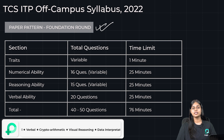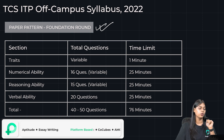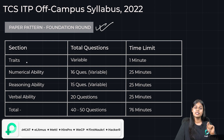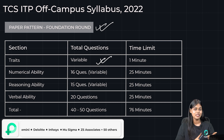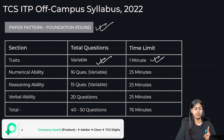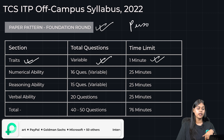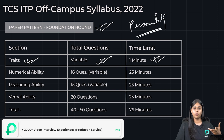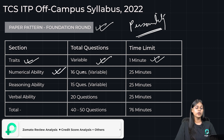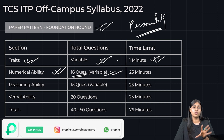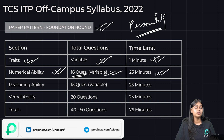Let's look at the Foundation Round details section by section. The first section is Traits — a personality or psychometric test with a variable number of questions and only one minute allotted. The second section is Numerical Ability, or Quants, with approximately 16 questions (variable) and 25 minutes to attempt it.